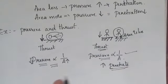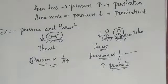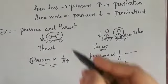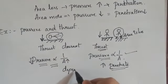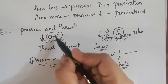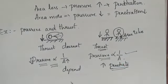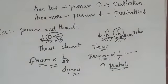From these two examples we conclude: thrust is the force acting perpendicular to the surface and remains the same in both cases. But pressure differs because area is different. Thrust does not depend upon area, but pressure depends upon area. Even when the area changes, thrust in both cases is the same, but not in the case of pressure. This is the major difference between thrust and pressure.